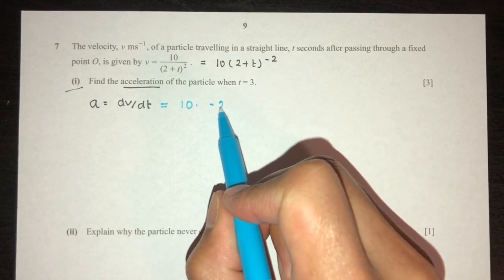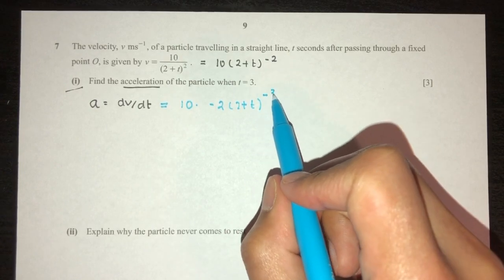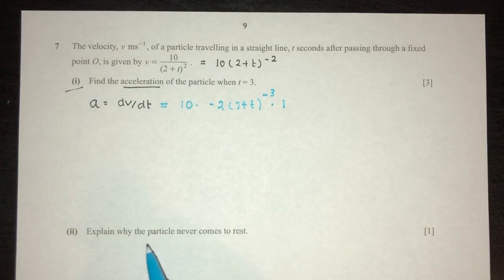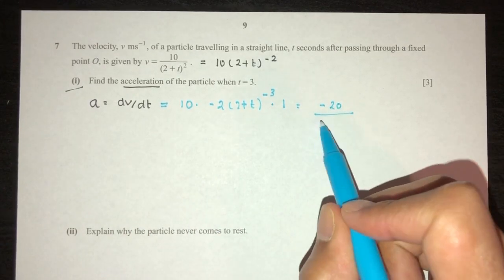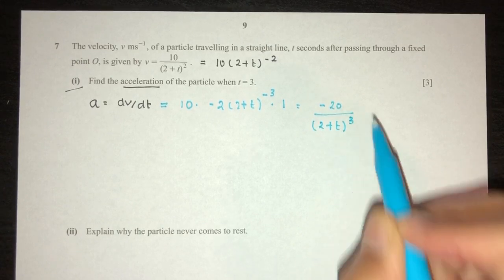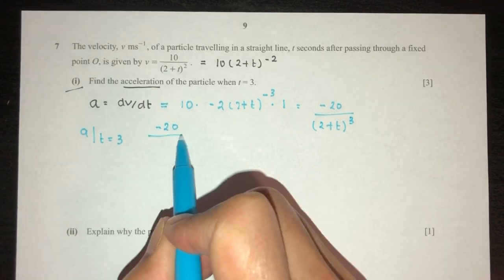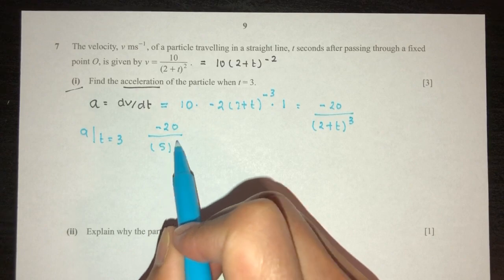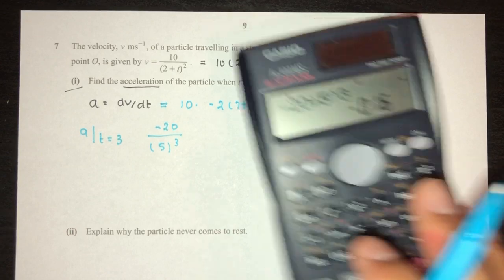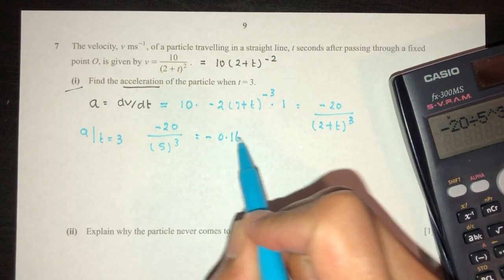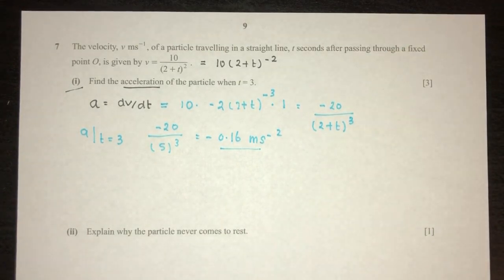Differentiating: dv/dt = 10 × (−2)(2 + t)^(−3) × 1 = −20 / (2 + t)³. At t = 3: a = −20 / 5³ = −20 / 125 = −0.16 m/s². That is the acceleration at time t = 3.